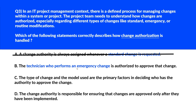Option B says the technician who performs an emergency change is authorized to approve that change. In many cases, emergency changes may be approved by a designated change authority, not the technician performing the change — so that's the wrong answer. Option C says the type of change and the model used are the primary factors in deciding who has the authority to approve the change. This correctly emphasizes that the type and model of the change play a key role in determining the appropriate approval authority. We'll park this.